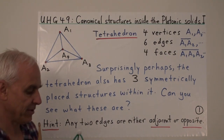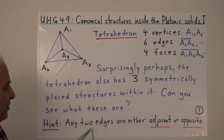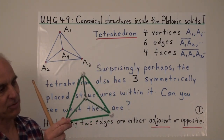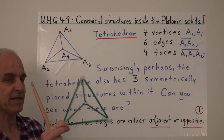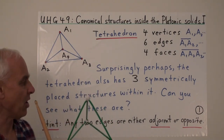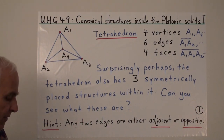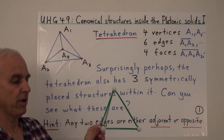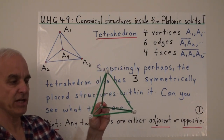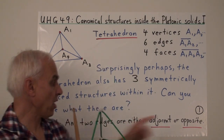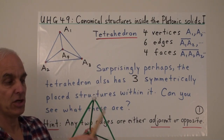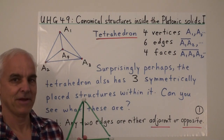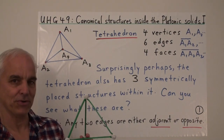I'd like you to think about what that three-fold symmetry might be. It turns out that there are three symmetrically placed structures inside the tetrahedron — I'd like you to ponder and see if you can figure out what those three symmetrically placed substructures are. As a hint: if you look at two edges, they're either adjacent — meeting at a vertex — or they are opposite, meaning they don't meet at a vertex.